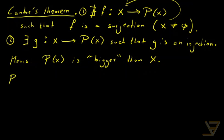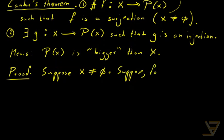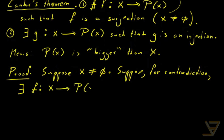The proof is going to be similar to Russell's paradox. If you've seen that before, this should be a piece of cake. Suppose x is a non-empty set. And suppose, for contradiction, that there exists a function going from x to the power set of x that is a surjection. We're going to be deriving a contradiction from this assumption.